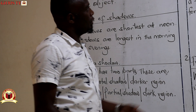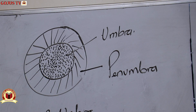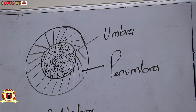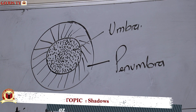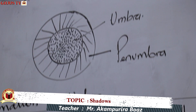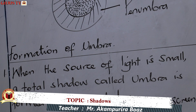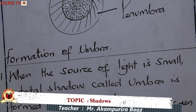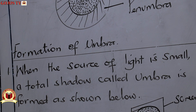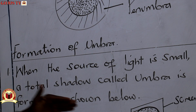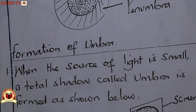As illustrated here, you can see that the umbra region is slightly darker than the penumbra. So we have the formation of the umbra, which we've said can also be called total shadow or the darker region of the shadow. When the source of light is small, a total shadow is formed, as shown in the diagram.